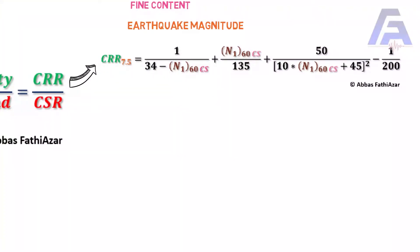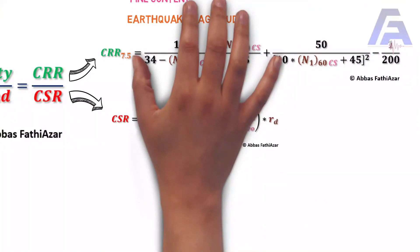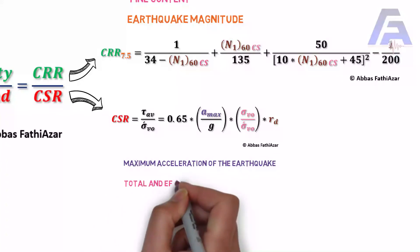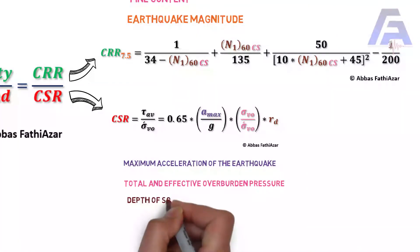should be divided by cyclic stress ratio, CSR, which is a function of maximum acceleration of earthquake, total and effective overburden pressure and depth of soil layer.